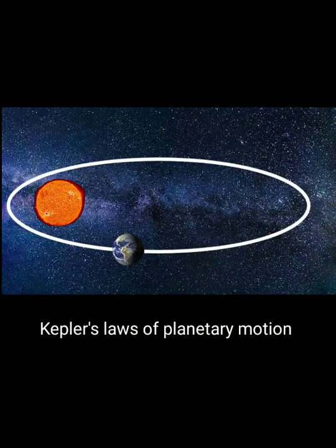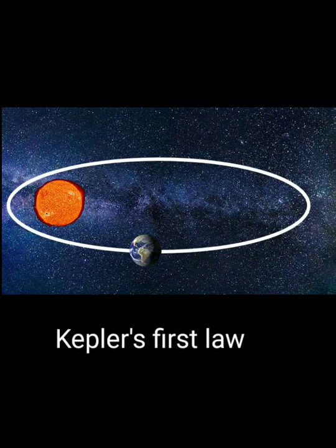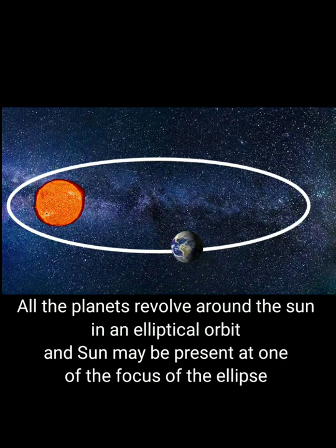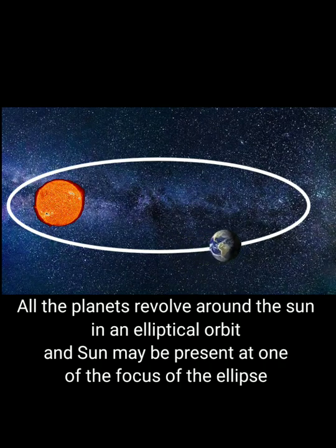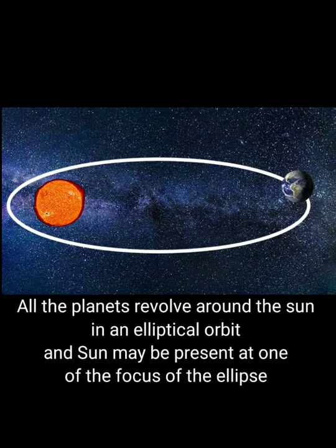Kepler's Laws of Planetary Motion. Kepler's first law: all the planets revolve around the sun in an elliptical orbit, and the sun is present at one of the foci of the ellipse.